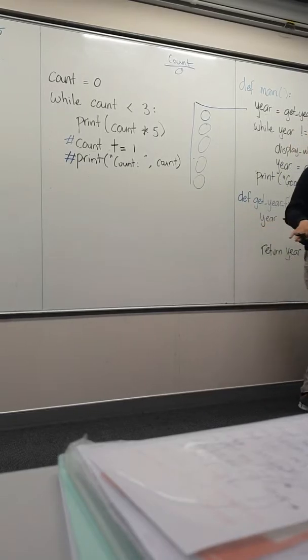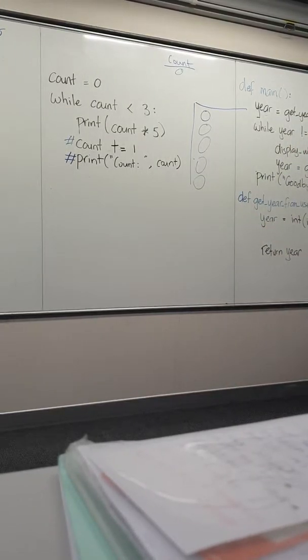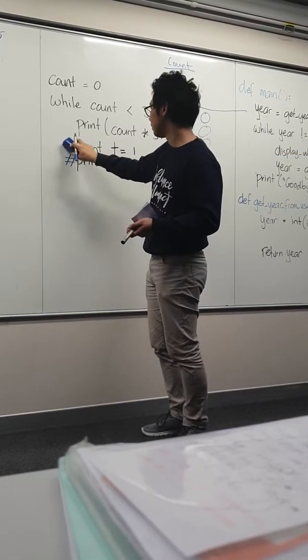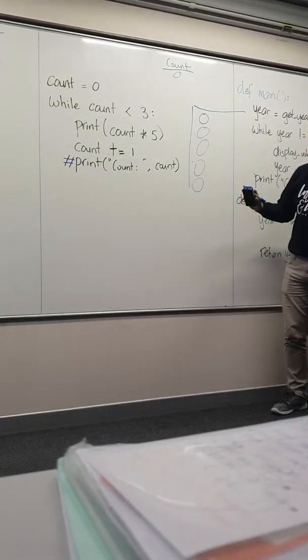We're going to just keep on getting an infinite loop of zeros being printed all the way down until you decide to close your program. But because we have that count plus equals one, that increment, that helps us to get out of the loop.